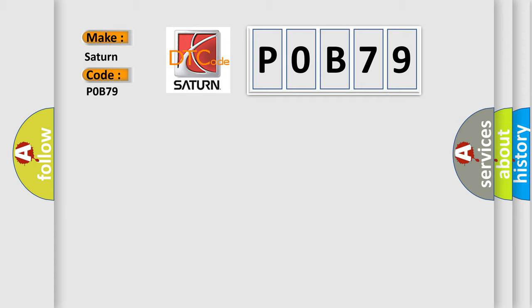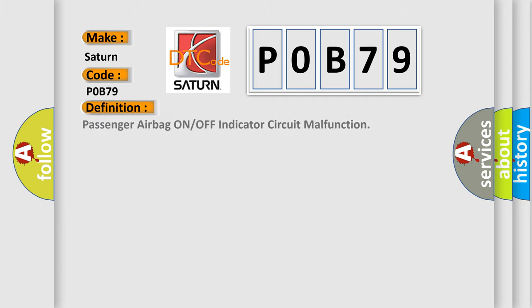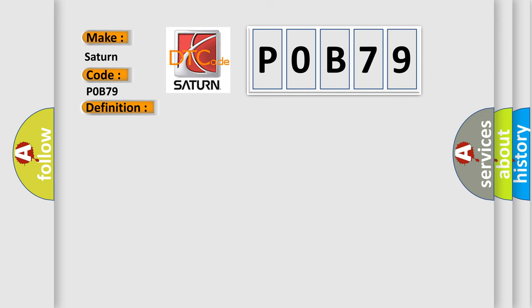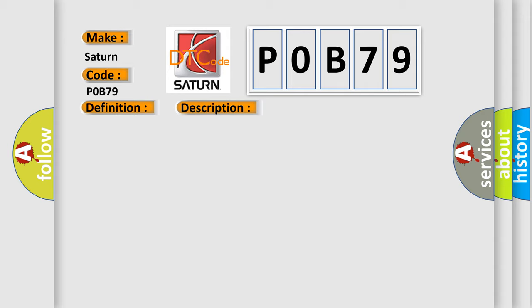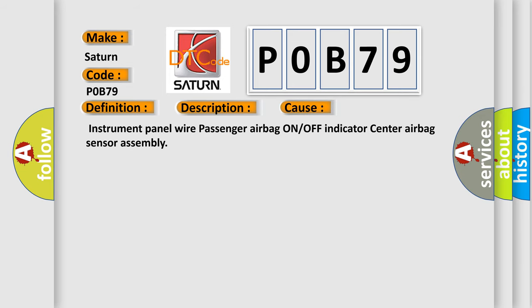Saturn car manufacturers. The basic definition is: Passenger airbag on or off indicator circuit malfunction. The center airbag sensor assembly receives a line short circuit signal, an open circuit signal, a short circuit to ground signal, or a short circuit to B-plus signal in the passenger airbag ON/OFF indicator circuit for 2 seconds — indicating a heater control base malfunction or center airbag sensor assembly malfunction. This diagnostic error occurs most often in these cases: instrument panel wire, passenger airbag on or off indicator, or center airbag sensor assembly.